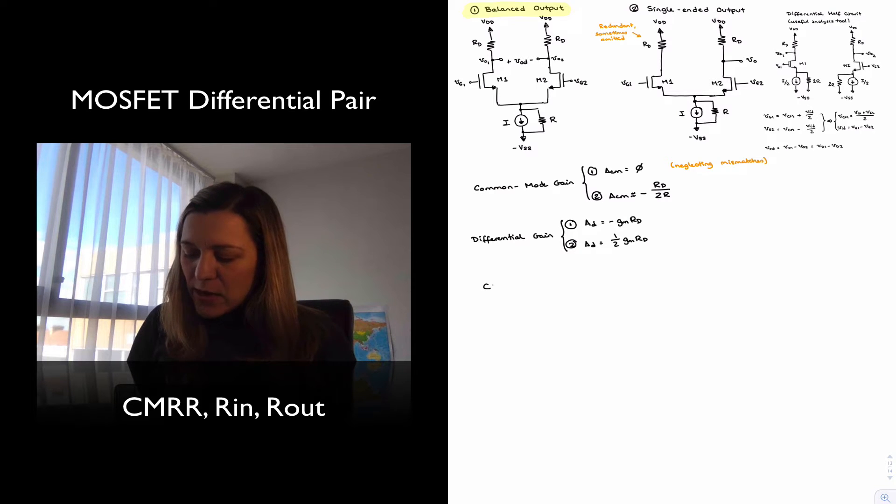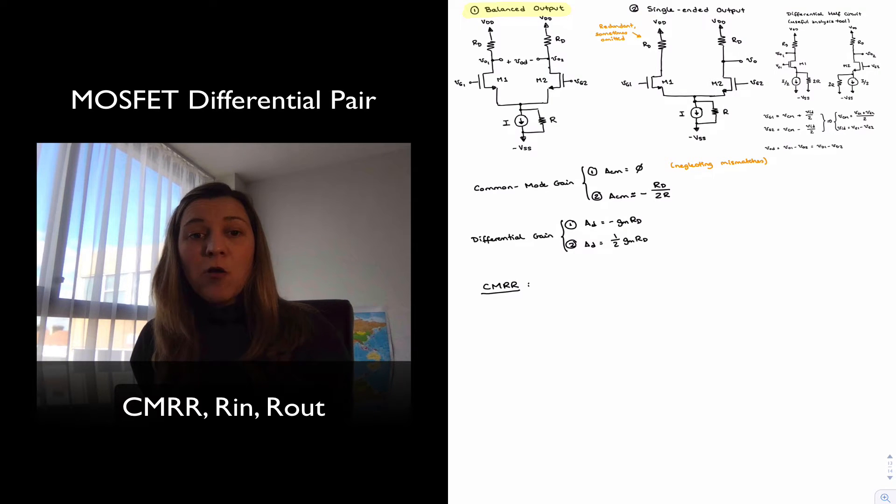Now remember that the CMRR is a ratio and it tells us how much, or it gives us an idea of how much the differential amplifier rejects or attenuates the common mode signal versus how much it amplifies the differential signal. And so just by definition it is equal to AD over ACM.